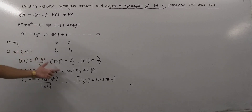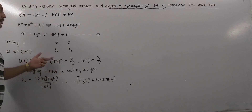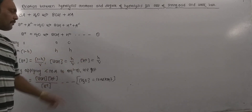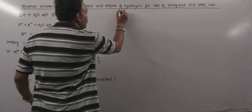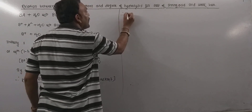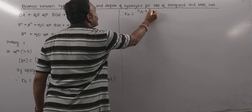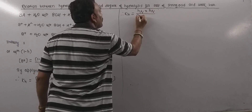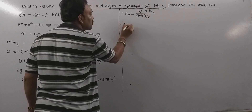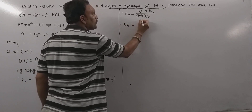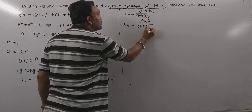Substituting the concentration values into the KH expression: KH = (H/V × H/V) / ((1 − H)/V), which simplifies to KH = H²/V² divided by (1 − H)/V, giving KH = H²/V upon (1 − H)/V, or KH = H²C / (1 − H), where C = 1/V is the concentration.